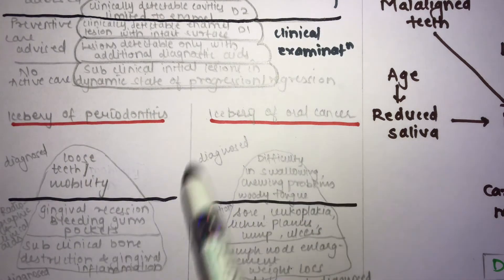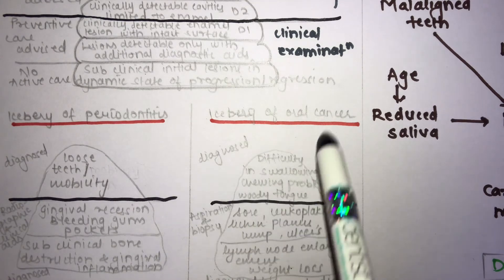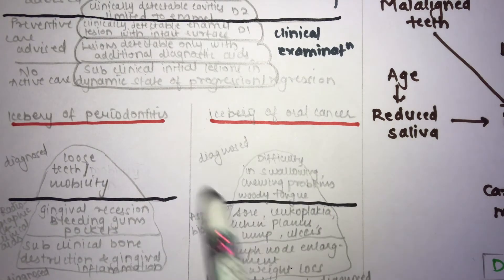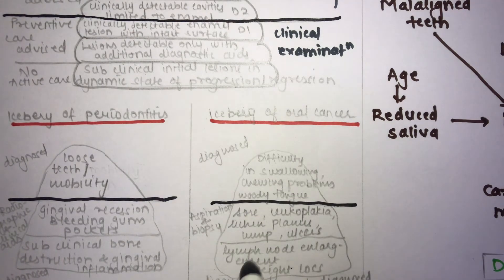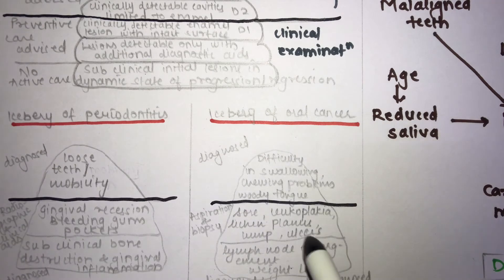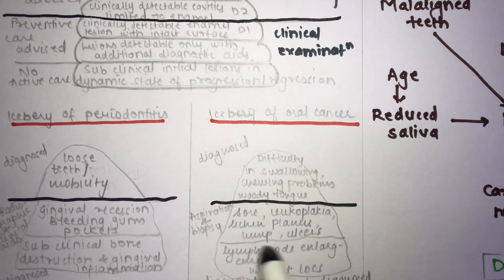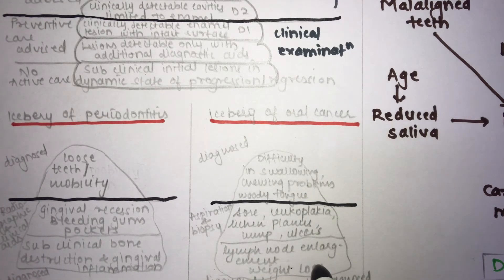For the iceberg of oral cancer: the diagnosed visible portion includes patients presenting with difficulty in swallowing, chewing problems, and changes to the tongue and oral cavity. The submerged portion includes pre-malignant conditions and lesions such as leukoplakia, lichen planus, lumps, and ulcers — detectable only after biopsy and aspiration. Undiagnosed or wrongly diagnosed findings such as lymph node enlargement or weight loss also remain in the submerged, undiagnosed part.